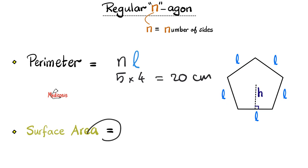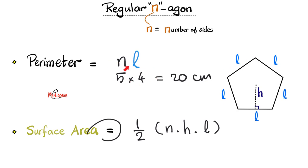To find the surface area of a polygon, you do: half times N times H times L. N is the number of sides — in this case five; H is the vertical height; and L is the side length — in this case four. These rules work whether you're talking about a pentagon, hexagon, or octagon.